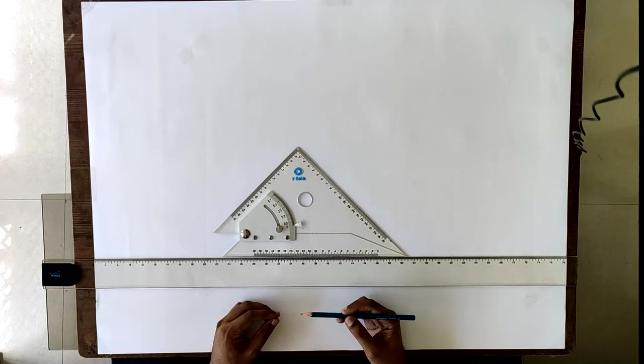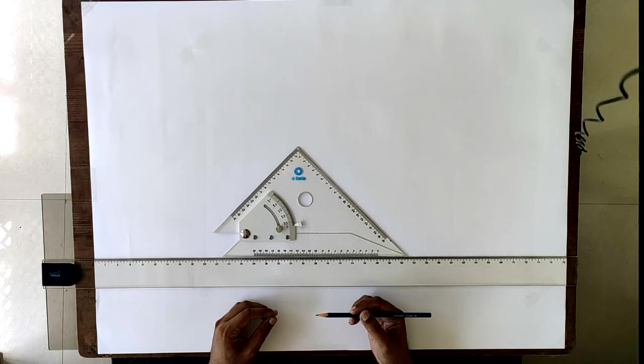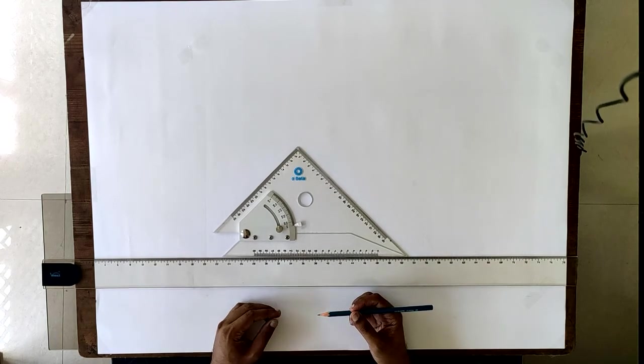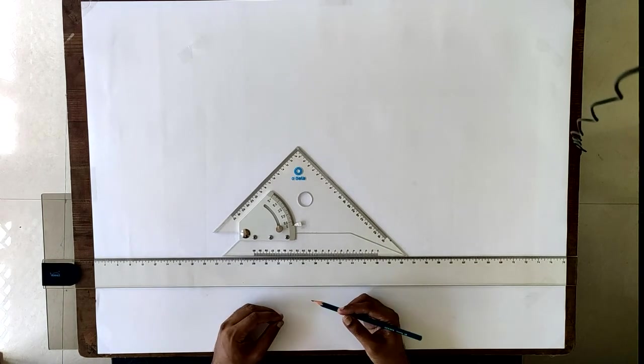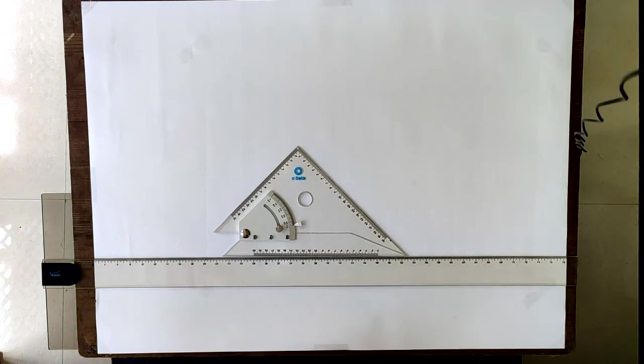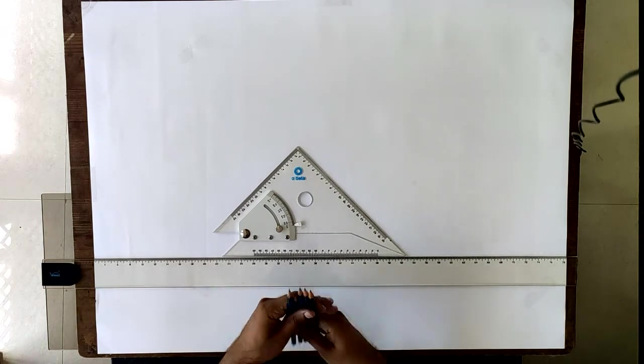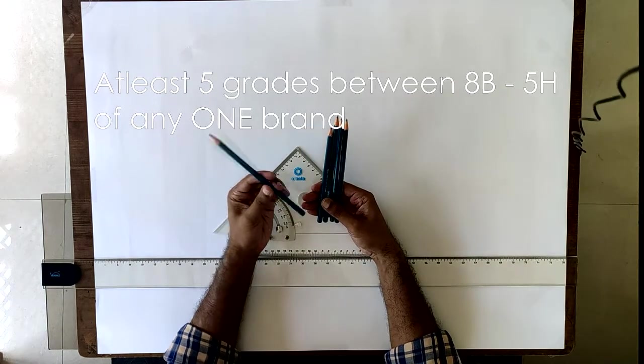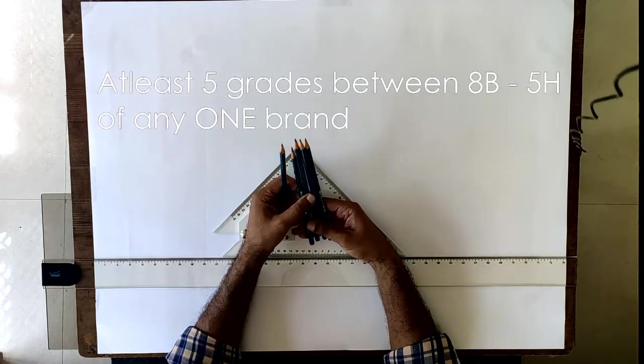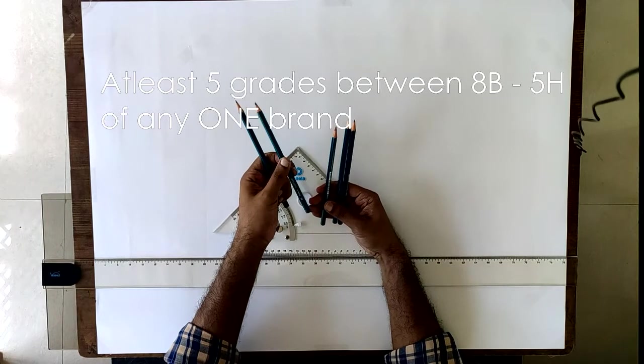To draw darker lines we have to use B pencils, and to draw lighter lines we use H pencils. You will need at least five of these variants: HB of course, and from the darker side a 2B pencil.